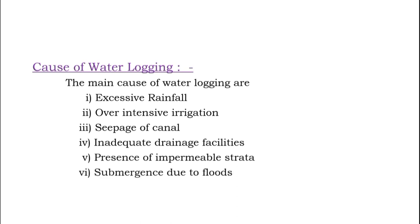Submergence due to floods: If the land continuously remains submerged by floods, weeds and grasses may grow and obstruct the natural surface drainage which increases the chance of waterlogging.